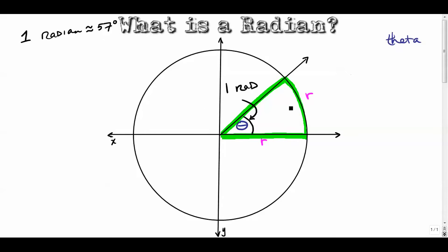We're going to hammer home these four basic points: zero radians, pi over two radians, pi radians, three pi over two radians, and back again to two pi radians. But before that, I want to show you a really cool animation I saw on Wikipedia.